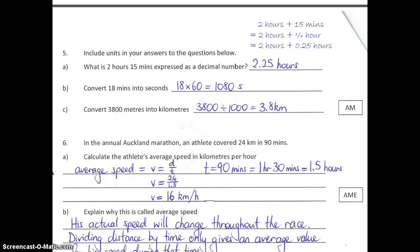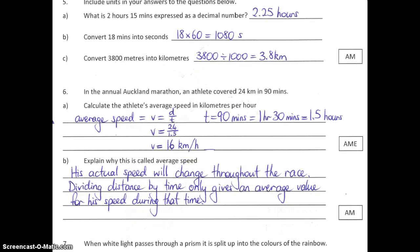Next question was question 6. It says: in the annual Auckland Marathon, an athlete covered 24 kilometres in 90 minutes. Calculate the athlete's average speed in kilometres per hour. This is a little bit of a tricky question.